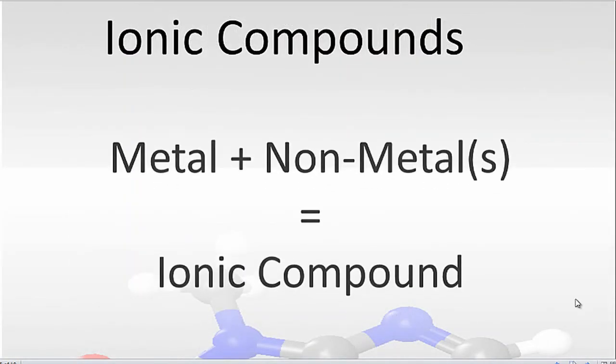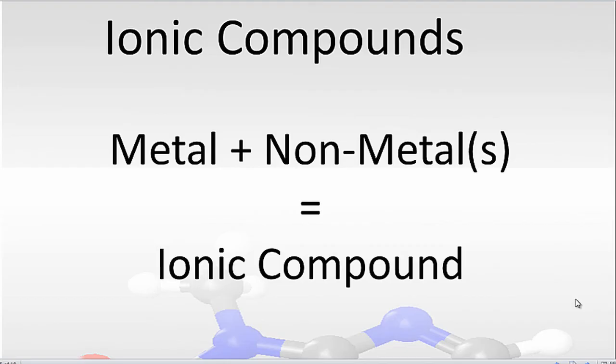So to wrap up, if you have a metal and a non-metal, or more than one non-metal, you end up having an ionic compound.